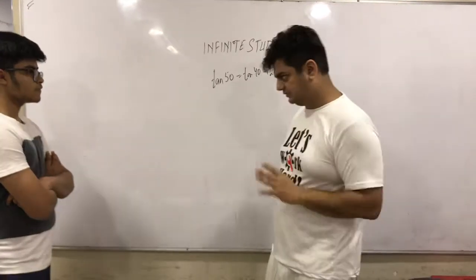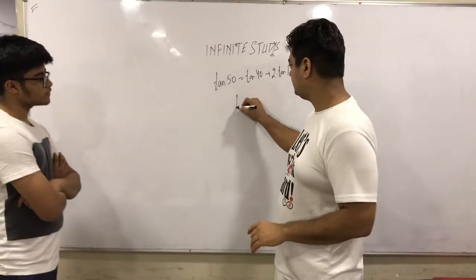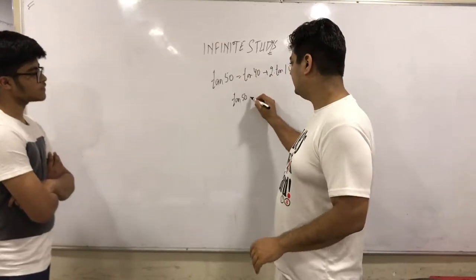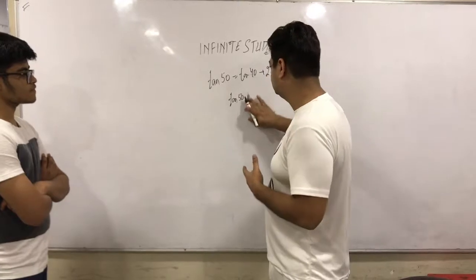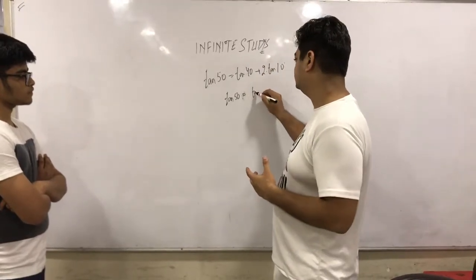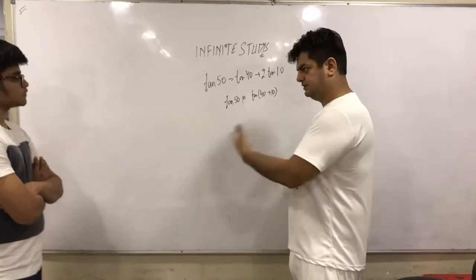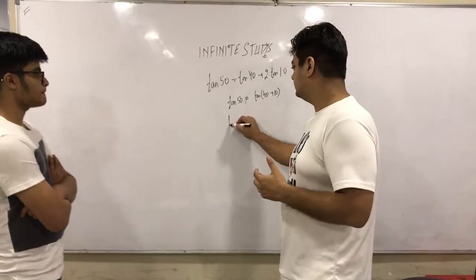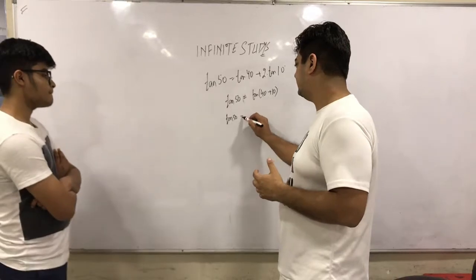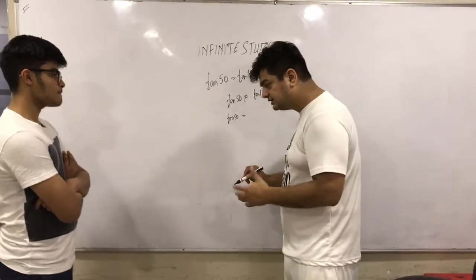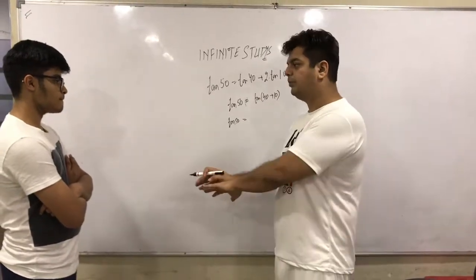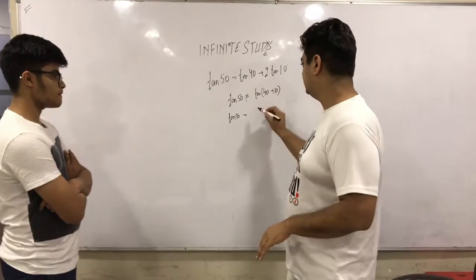Whenever you have such a situation, you don't have to prove LHS equal to RHS. You need to start your answer with a general concept that tan 50 is equal to tan of 40 plus 10. As you understand, tan A plus B is tan A plus tan B upon 1 minus tan A tan B.